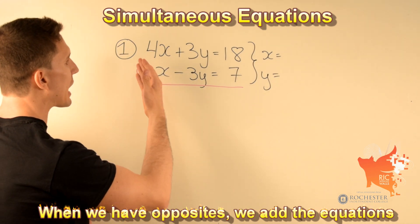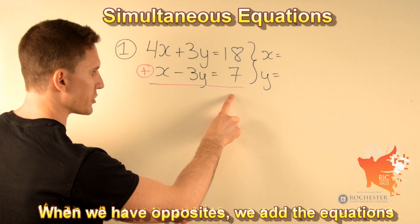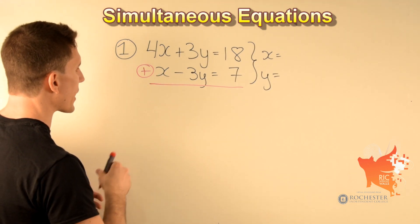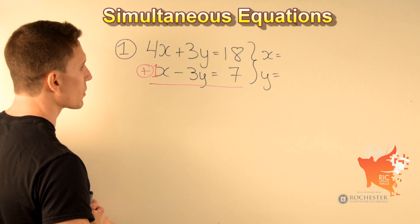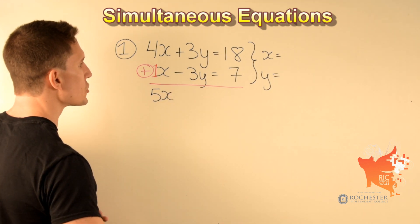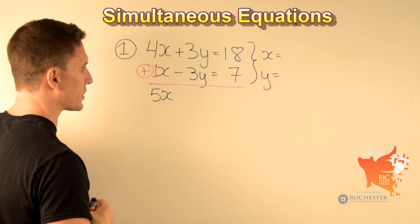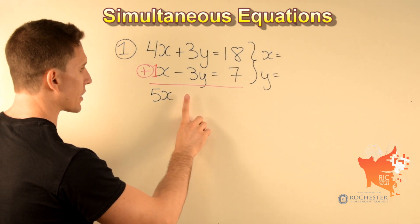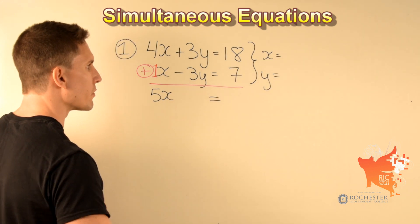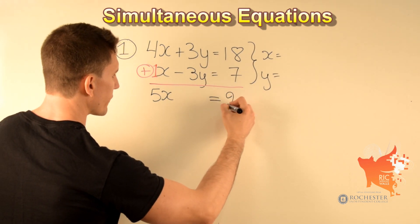All we have to do is add the two equations by parts — add the left-hand side and the right-hand side. Starting with the left-hand side, we add 4x and x. Remember x really means 1x, so 4x plus 1x gives us 5x. Then 3y minus 3y cancels out. On the right-hand side, 18 plus 7 is equal to 25.